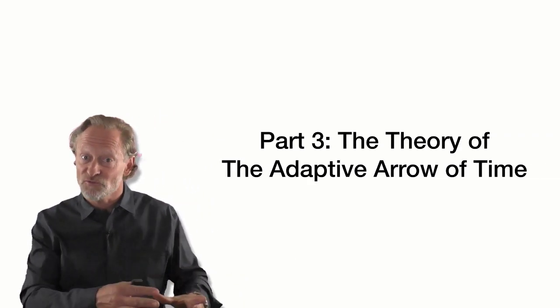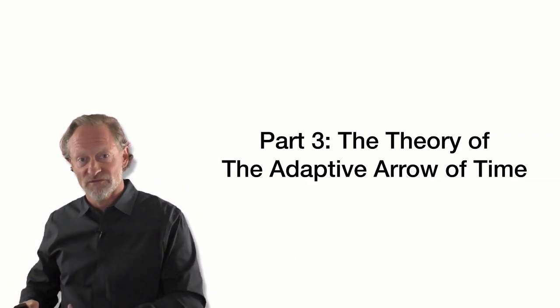So the adaptive arrow of time tells you that you go from probable states to an improbable state, from disordered states to an ordered state.